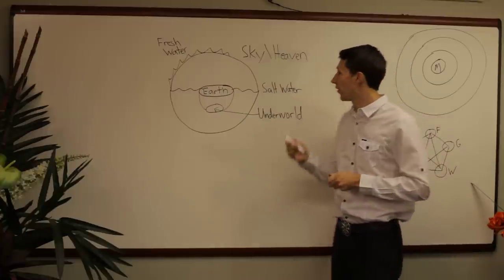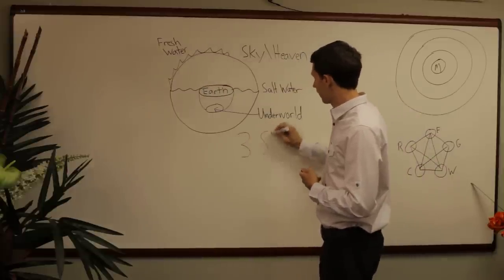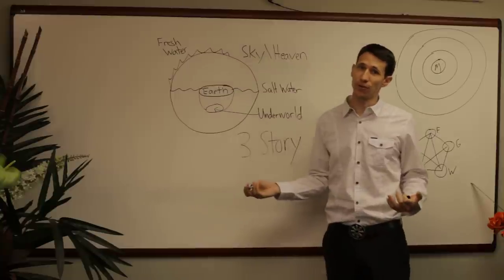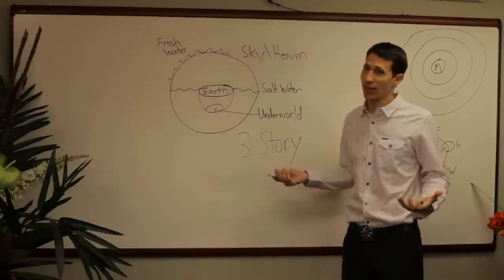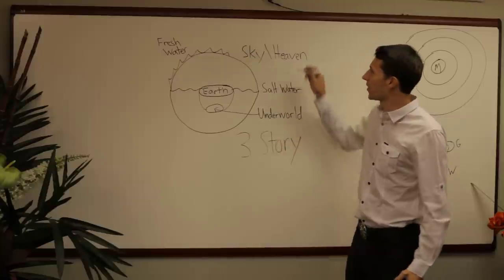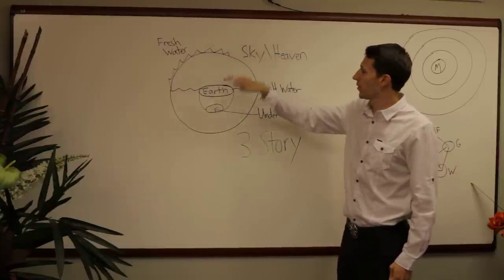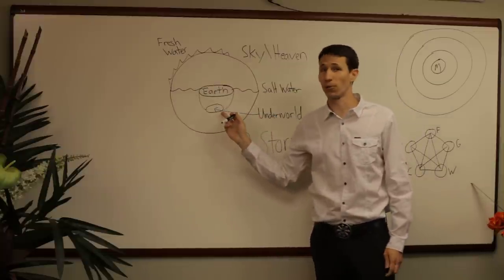So you have what's called a three-story universe. Why a three-story universe? Because you have three elements just like in a building. You've got the top element which is the sky, the middle earth and the oceans, and then there's always an underworld.